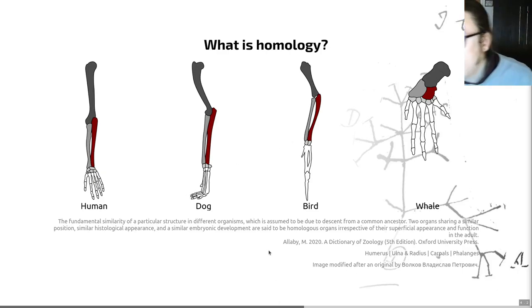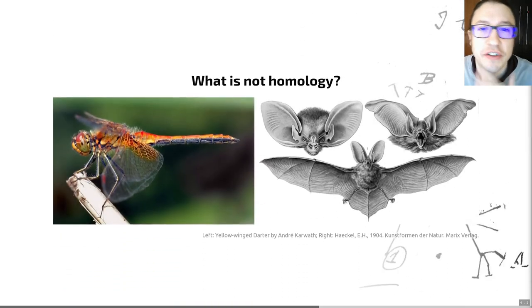In this case we can identify the humerus, the ulna and radius, the carpals and the phalanges in a human shown here, but also in a dog and indeed in a bird and even in a whale where the limb has become a flipper. That's an example of the homology of structures and homology is really important when it comes to phylogenetics because homology is basically where we get our phylogenetic signal.